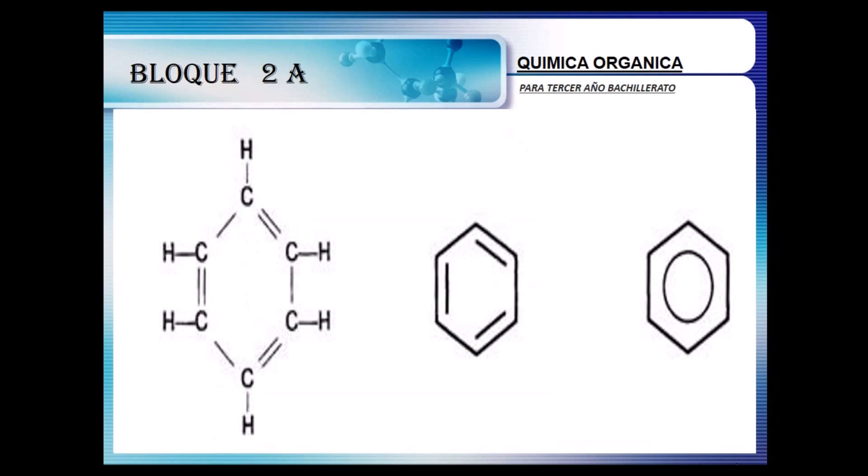Benzene here we can see is a hexatriene in positions 1, 3, and 5. So in positions 1, 3, 5, we have benzene.